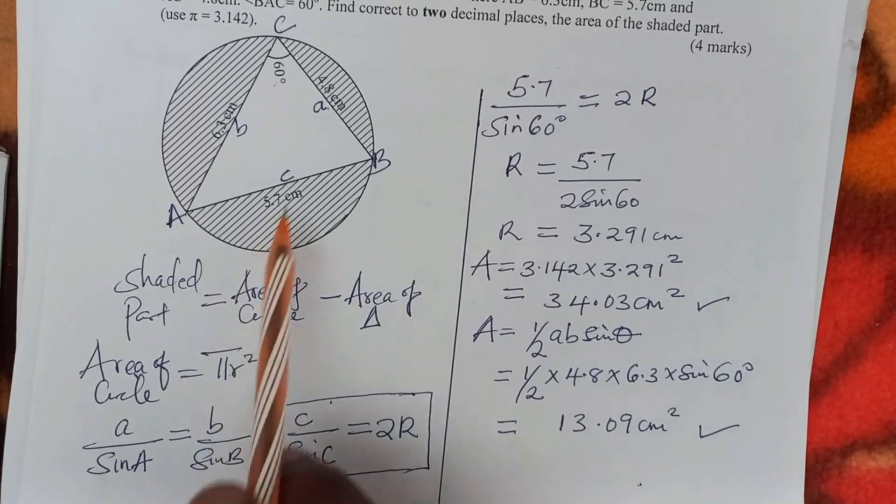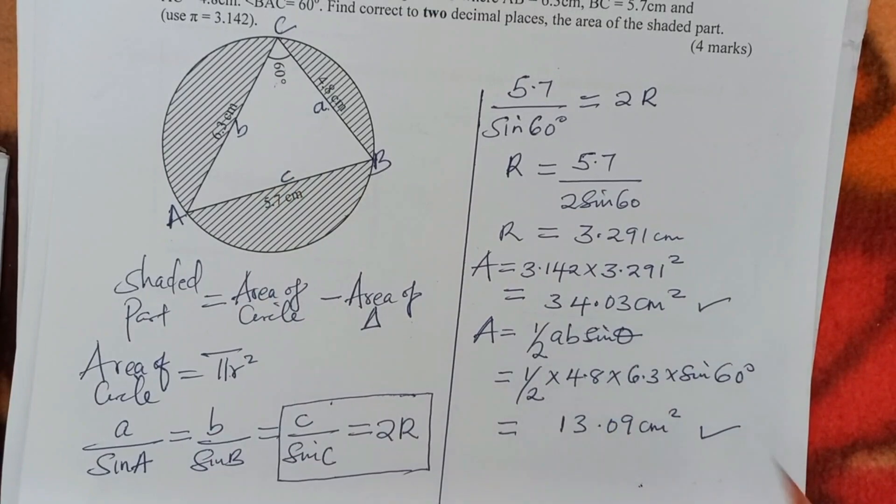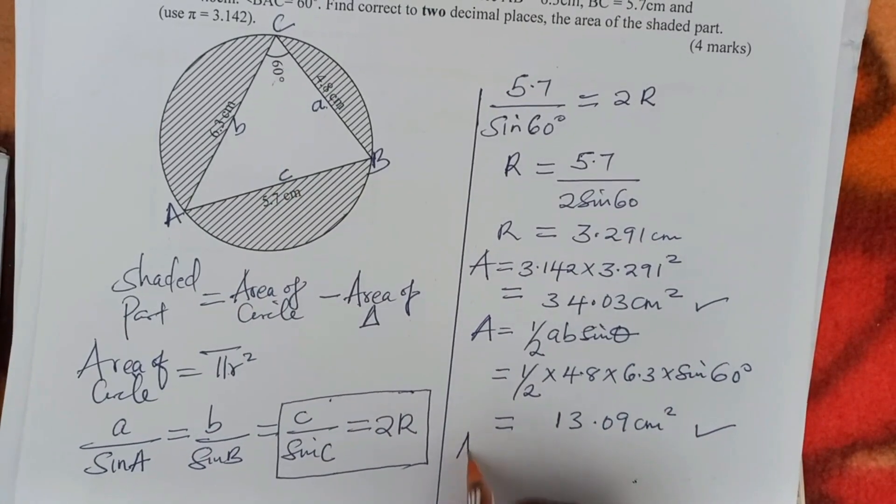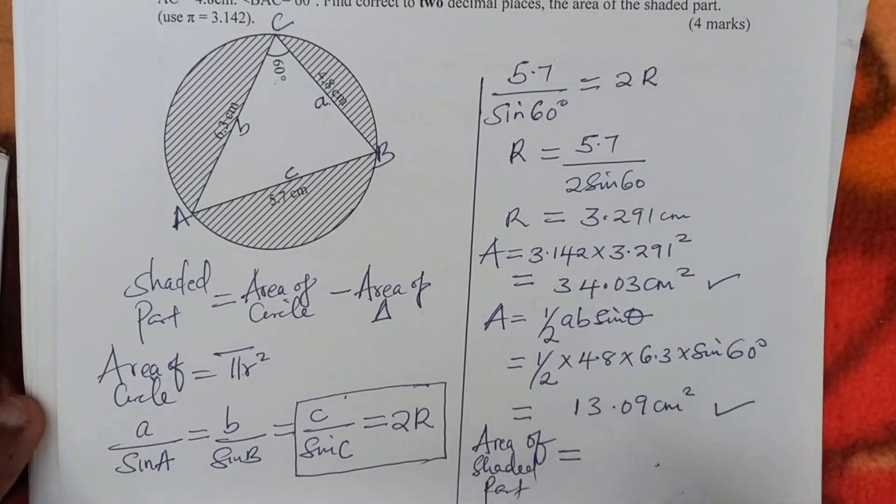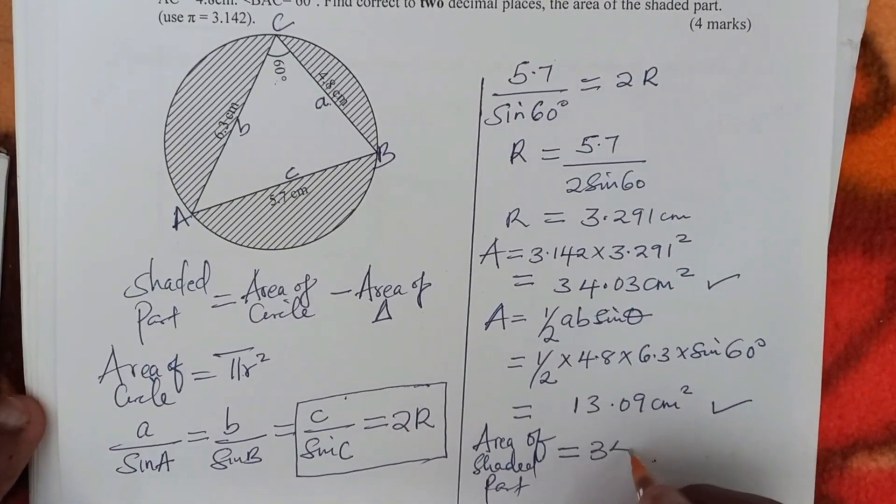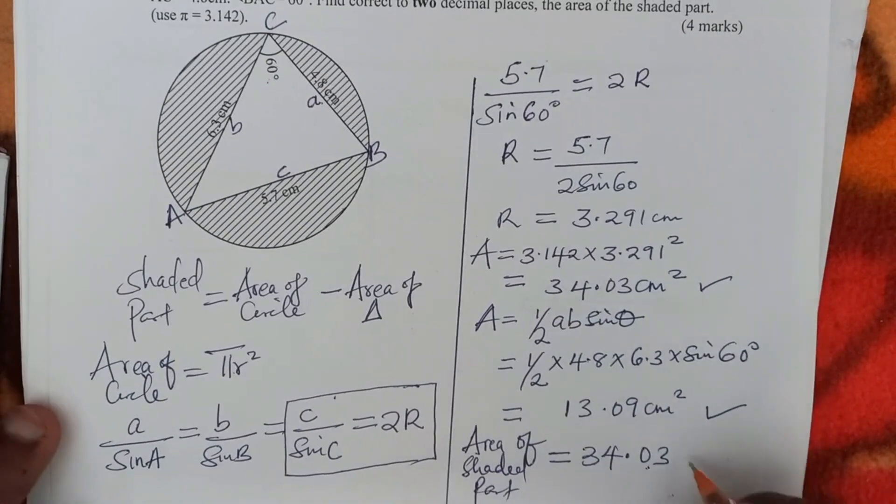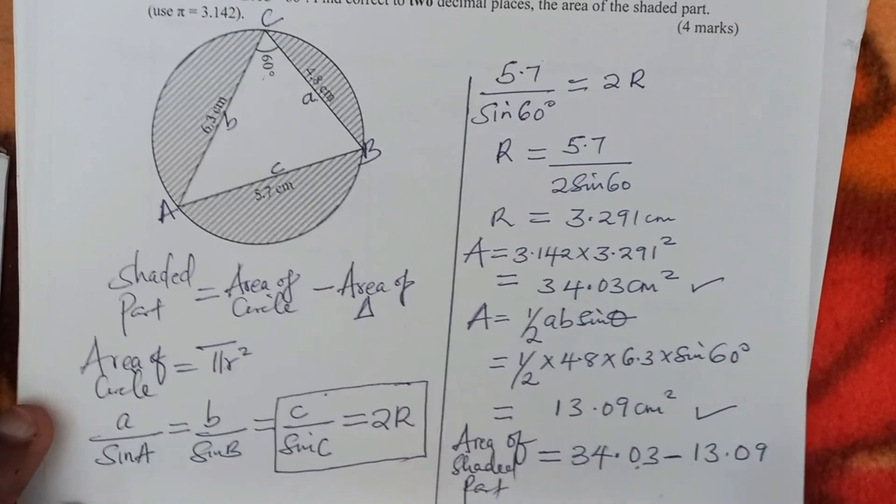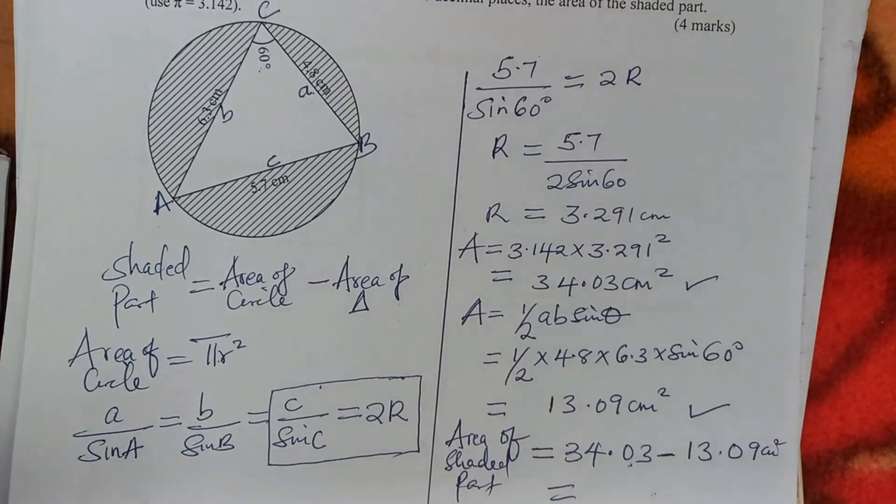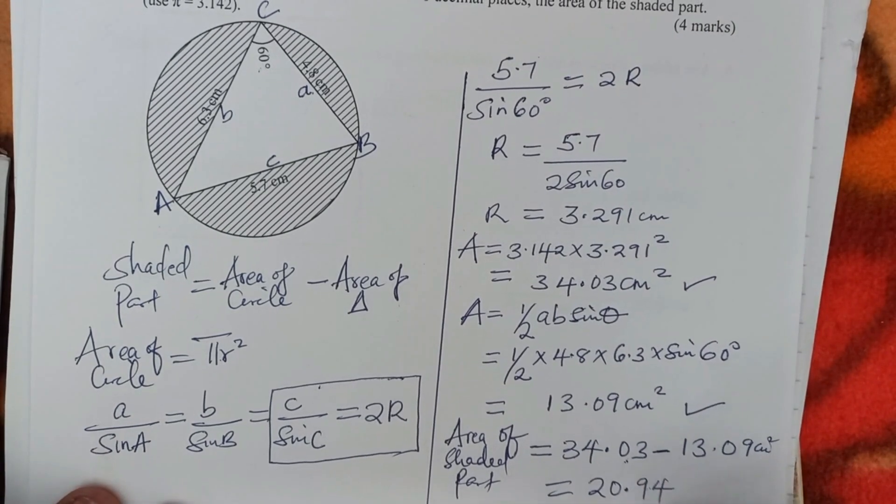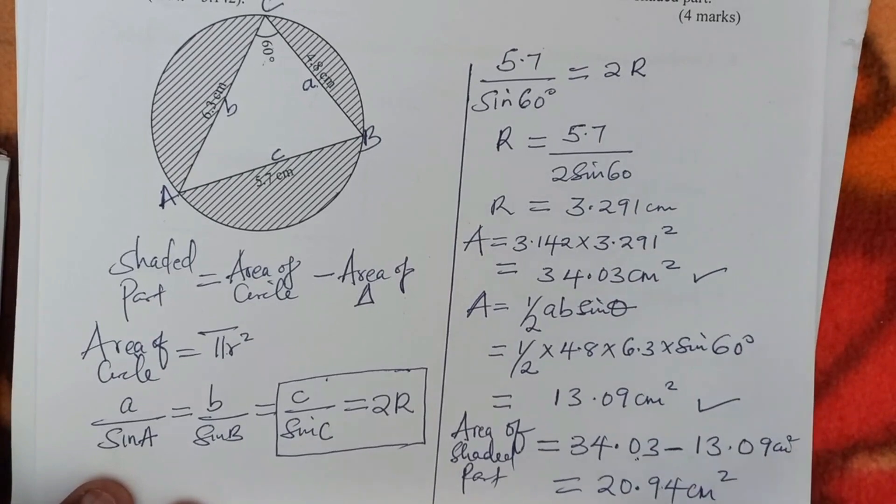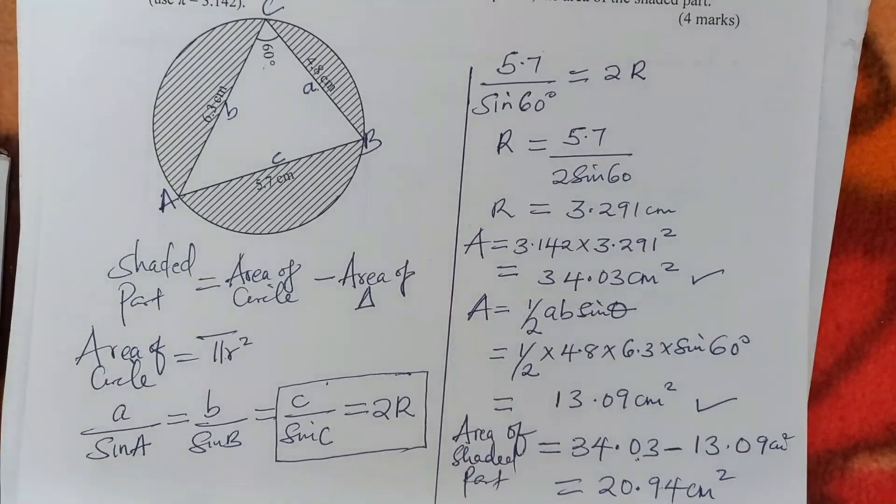So now we have the area of the circle and the area of the triangle. So therefore, the area of the shaded part is given by the area of the circle, which is 34.03, subtract the area of the triangle. That will give 20.94, 20.94 centimeters squared. That is how you're supposed to get the area of the shaded part.